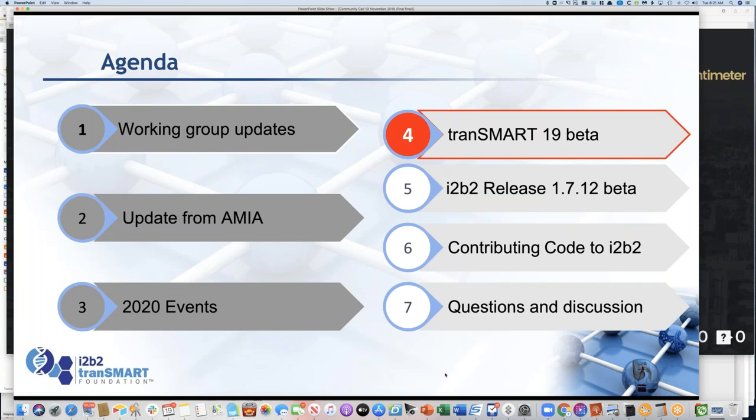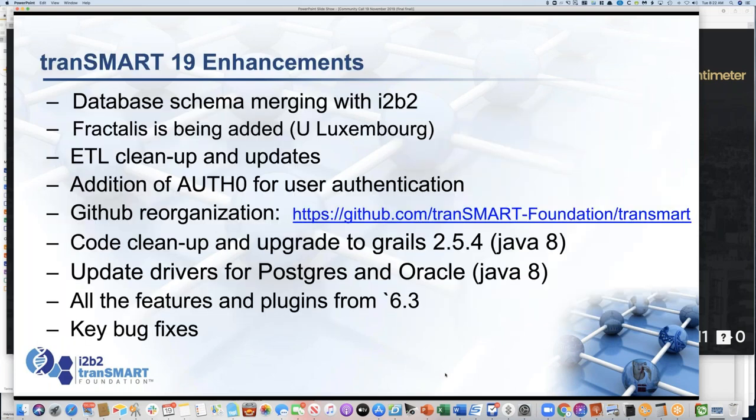Both Transmart and I2B2 are in beta right now — Transmart with version 19 and I2B2 with 1.7.12. Transmart 19 has a lot of changes, a lot of under-the-hood modifications as well as a couple of new things. We are continuing to push the database schema to be the same as I2B2, which we think is going to give us a lot of interesting benefits — you'll have the opportunity to open the same data in either application, depending on whether you're doing cohort querying with I2B2 tools or statistical analysis in Transmart.